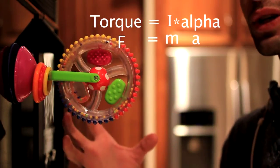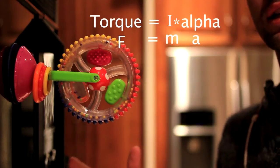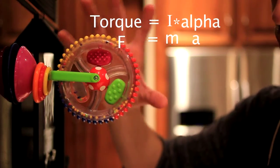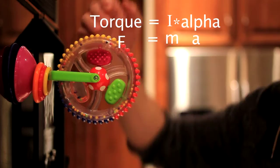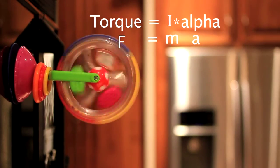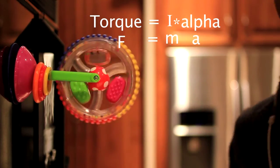The more mass an object has, the more force it takes to get that object to accelerate. Here, the more moment of inertia an object has, the more torque it takes to get that object to spin.